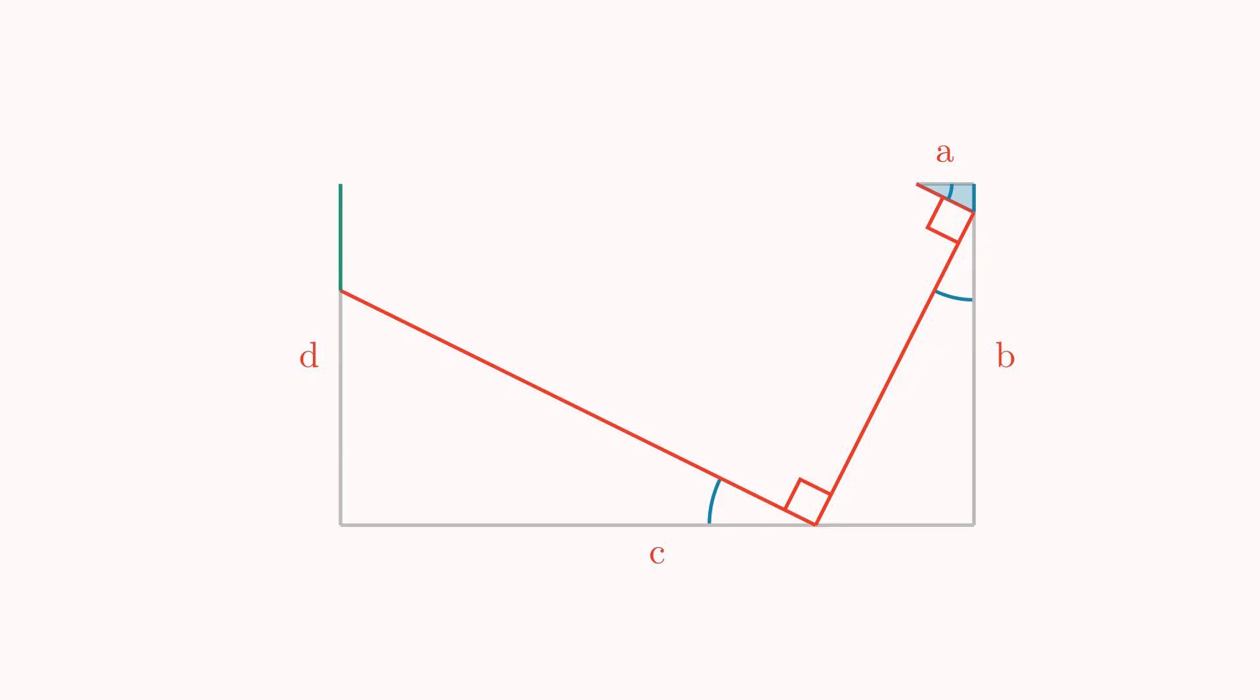We can now start labelling the lengths of some of the segments. This one, as we just worked out, was A tan theta. The one underneath is the length of the whole vertical line, B, minus that small segment, A tan theta. We now have an angle and adjacent side, so we can label the length of the opposite side as the tangent of the angle multiplied by the adjacent side. If we keep going till we reach the green segment...